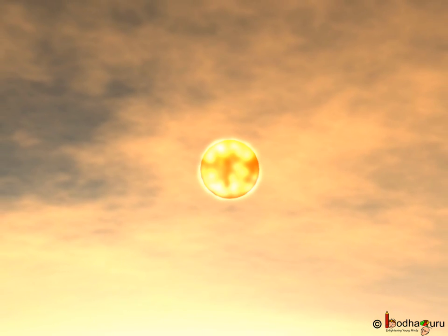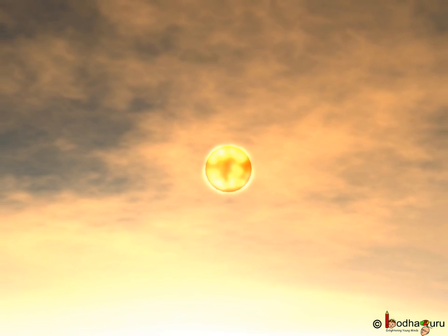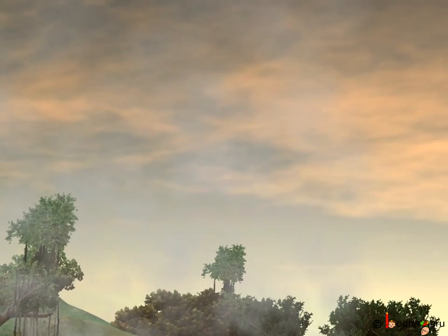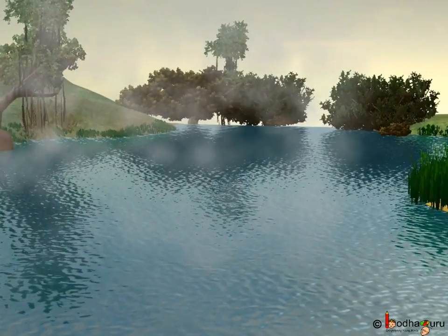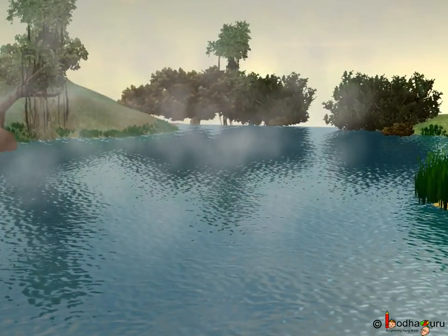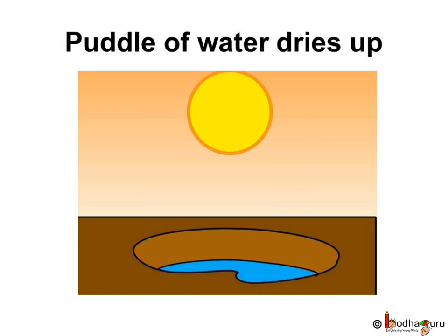Due to the heat of the sun, evaporation from all the water bodies like sea, river, lake, and even puddles of water goes on all the time, and hence the puddle of water eventually dries up.